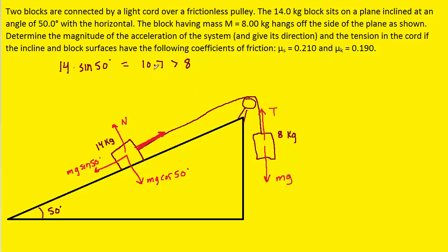And since it's greater, that means that box will indeed slide down the ramp. And as that box slides down the ramp, we're going to have a kinetic frictional force that's opposing that motion. So we're going to have this Fk force right here.